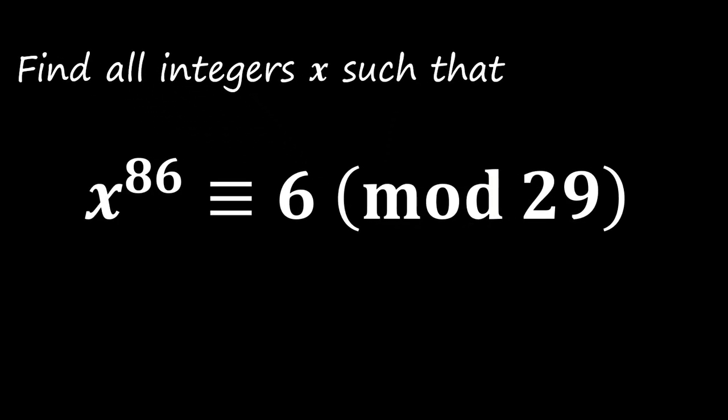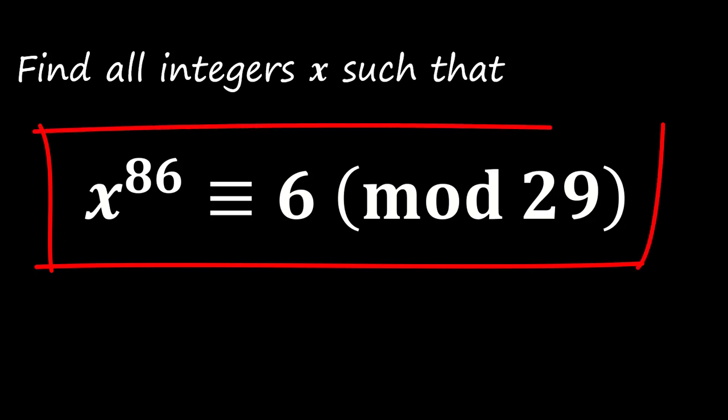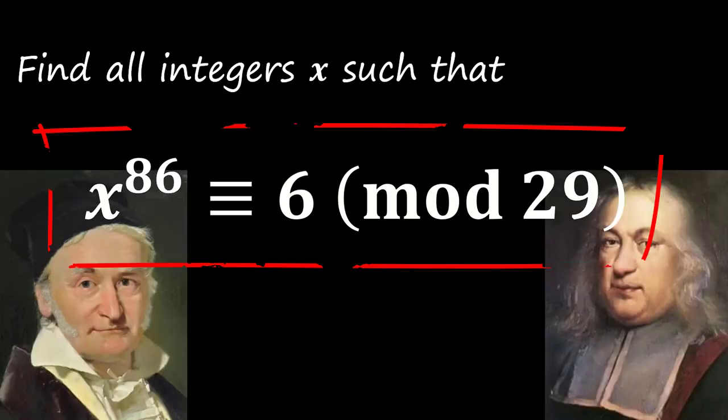For today, let's look at this fundamental and interesting number theory question. Here is the question: find all integers x such that x^86 ≡ 6 (mod 29). Please have a good try before you look at the answer.